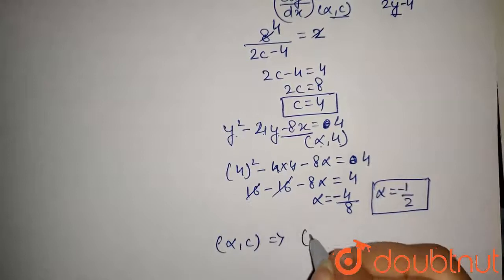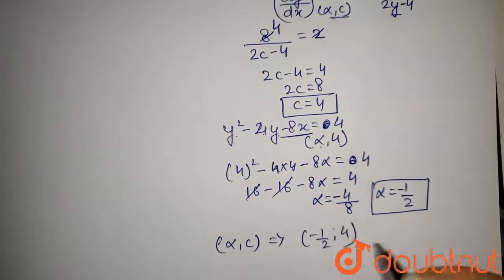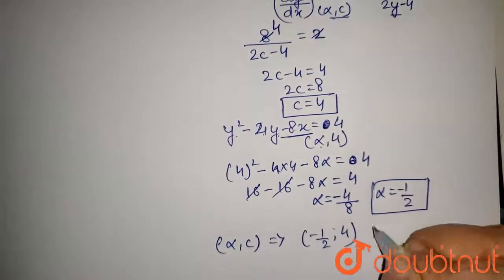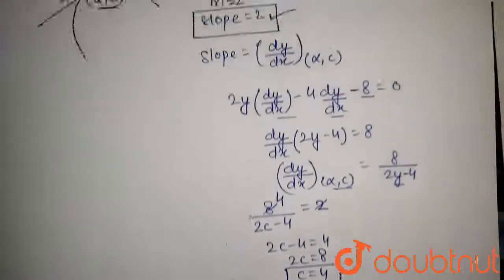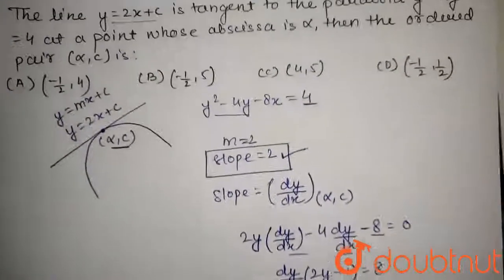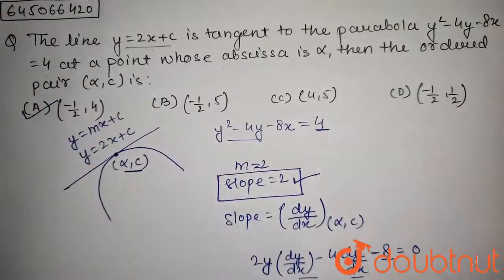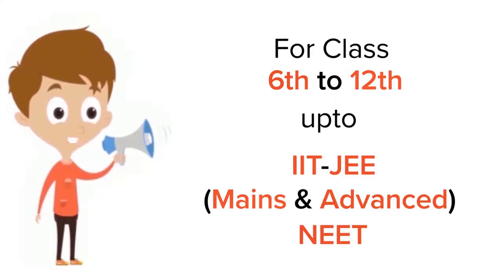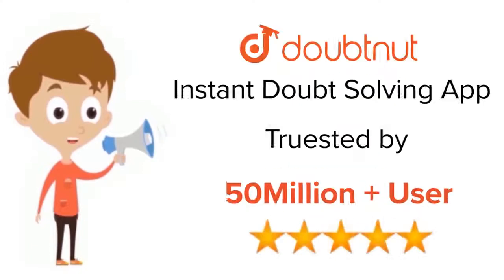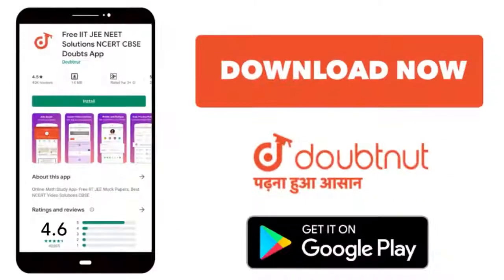So the ordered pair (alpha, c) is (-1/2, 4). This is the answer to the question, and option A is the correct option. For class 6 to 12, IIT JEE and NEET level, trusted by more than 5 crore students — download the DoubtNet app today.